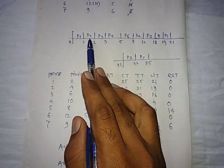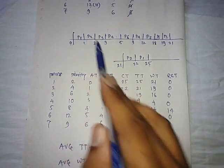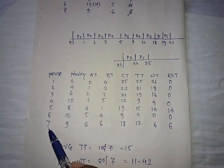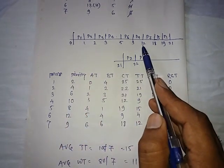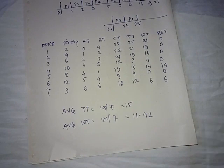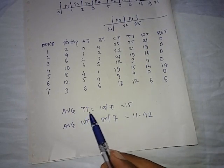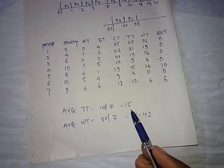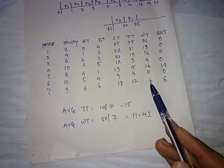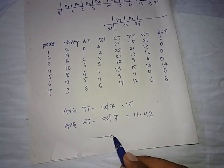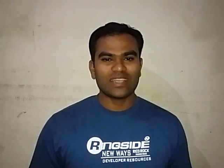For P2, the first occurrence on the Gantt chart is at time 1, and its arrival time is 1, so response time is 1 minus 1 equals 0. For P7, checking from the left side of the Gantt chart, the first occurrence is at time 12, and its arrival time is 6, so response time is 12 minus 6 equals 6. The average turnaround time is the sum of all turnaround times — 105 — divided by the total number of processes, 7, giving 15. The average waiting time is the sum of waiting times divided by number of processes, which is approximately 11.42. Thank you.